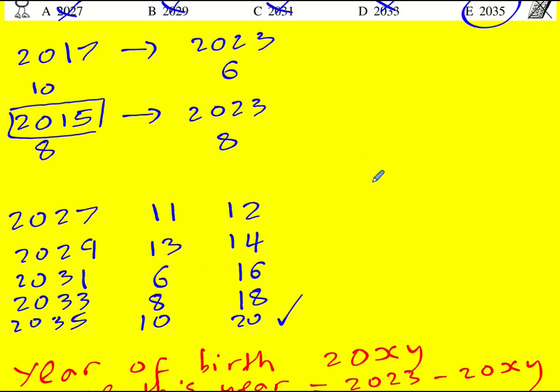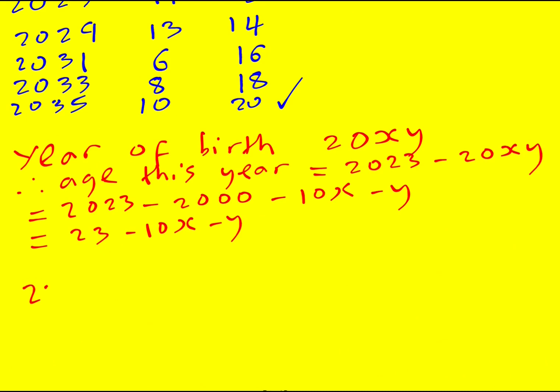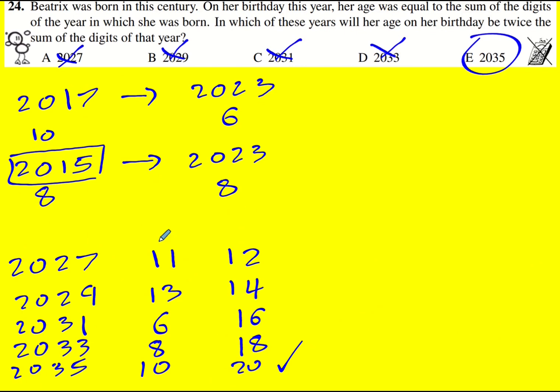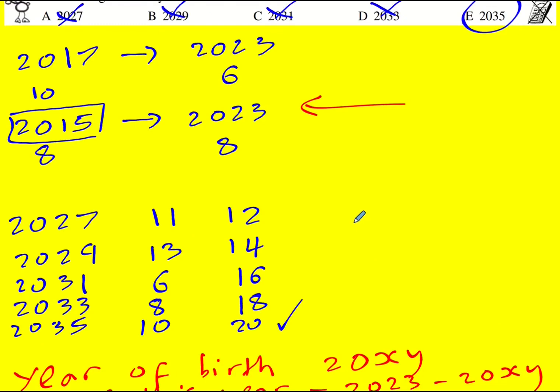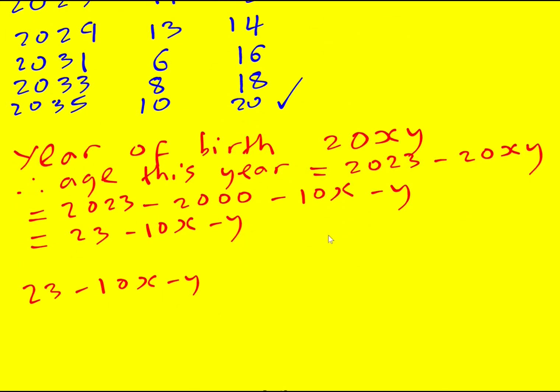And then we're told that her age is actually equal to the sum of the digits of the year that she was born. So it must be that 23 minus 10x minus y, I know this is looking more complicated, like that first method was much quicker, but we're talking about what if the question was loads more complicated or expected you to prove it and so on. So it's worth sticking with it, trust me. So that is going to equal the digit sum which is 2 plus x plus y. Okay, can rearrange this so it's going to be 11x plus 2y is equal to 21.